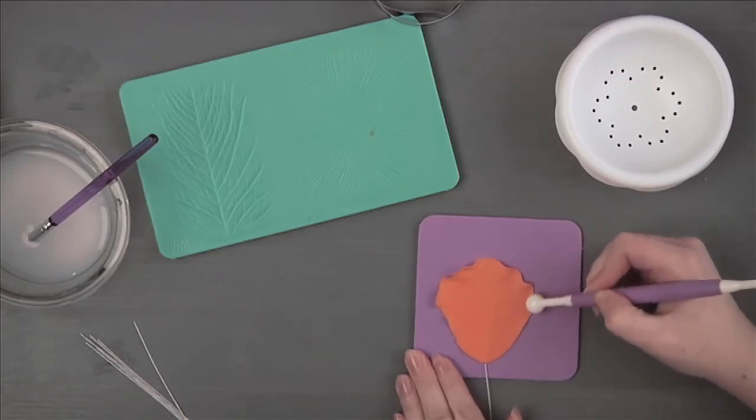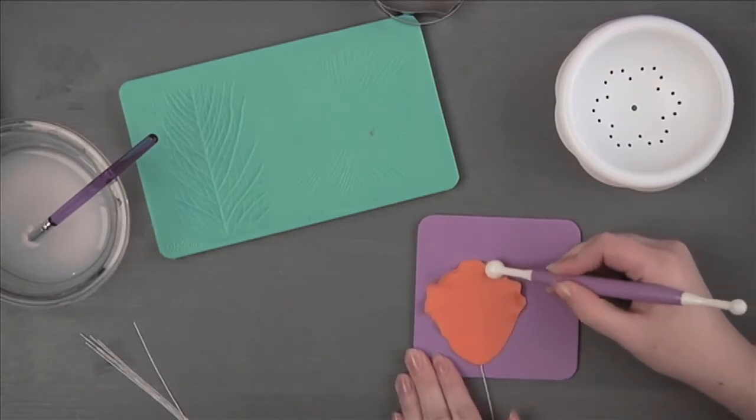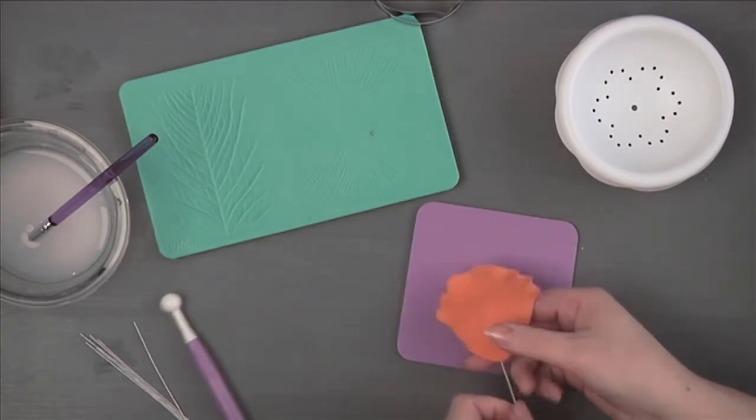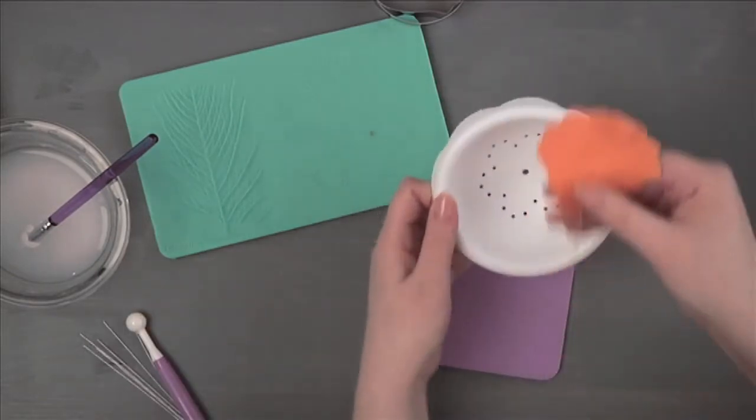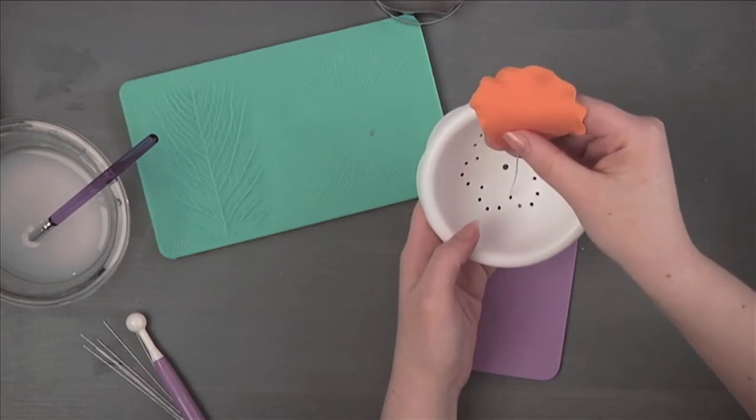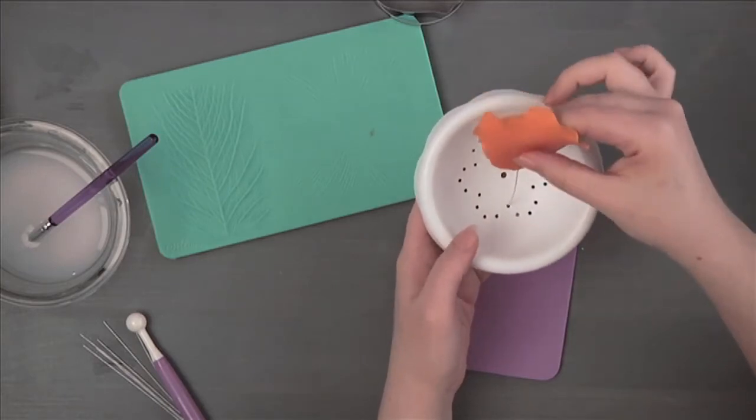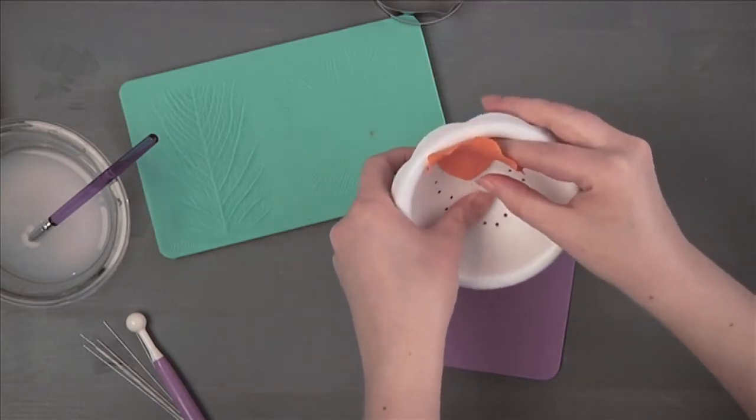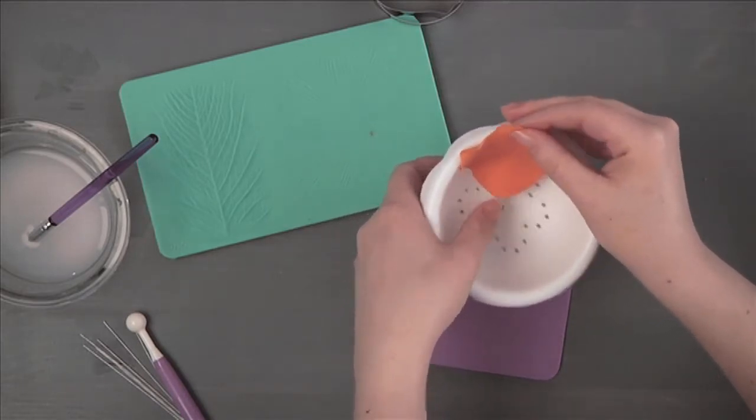For more ruffled petals, use a modeling stick to thin the petal edges. Dust the flower forming bowl with cornstarch and position the petal with the top edge overlapping the edge of the cup. Two petals will fit in each cup.